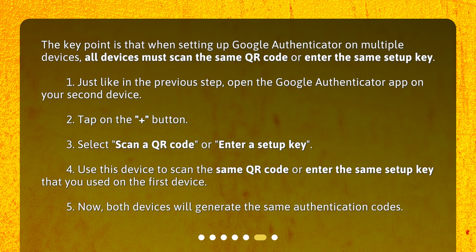4. Use this device to scan the same QR code or enter the same setup key that you used on the first device. 5. Now, both devices will generate the same authentication codes.